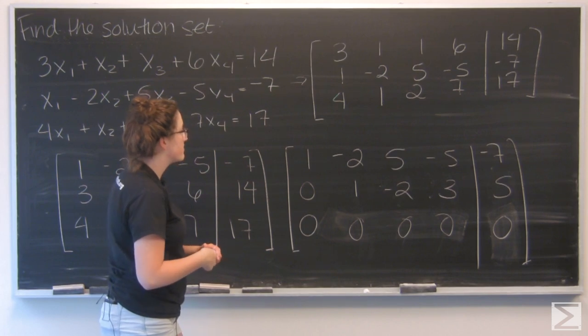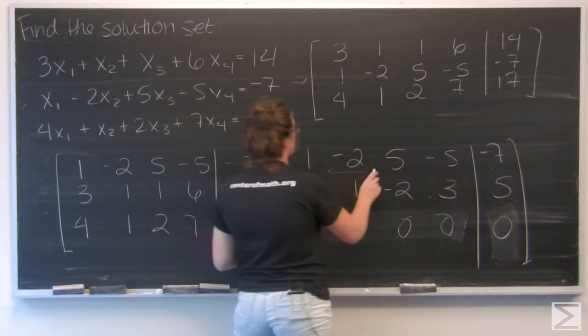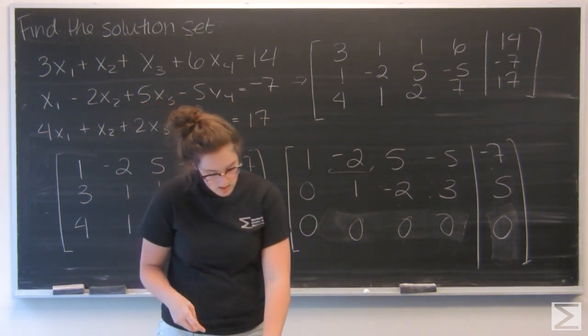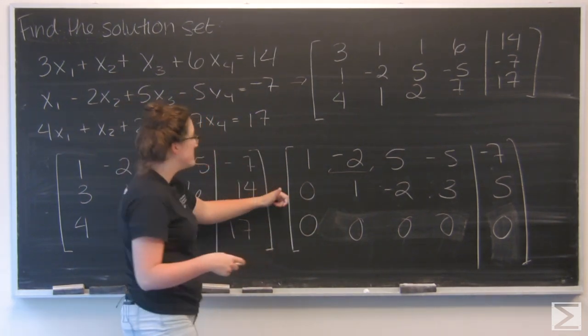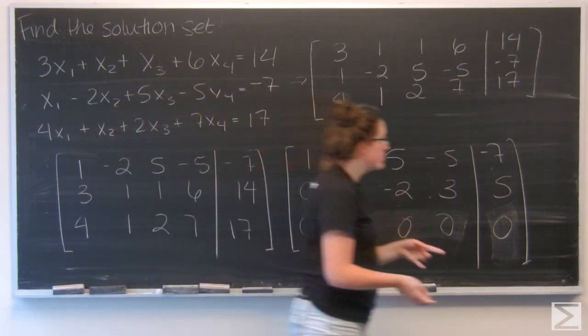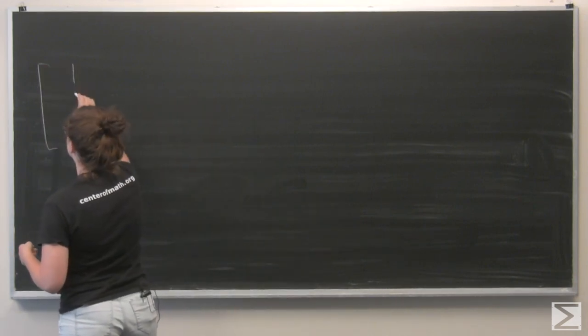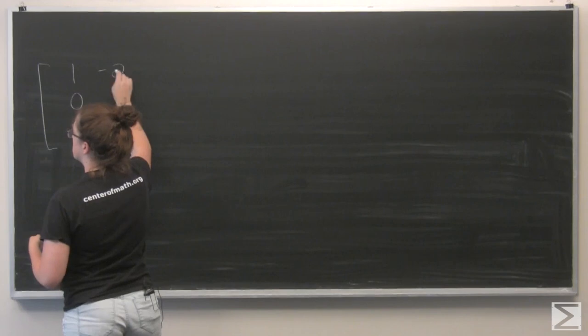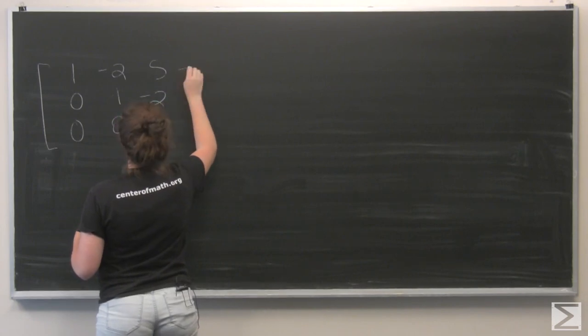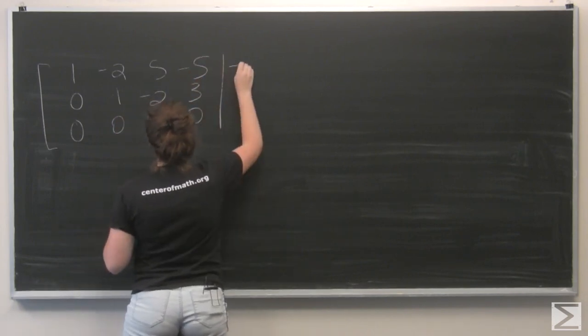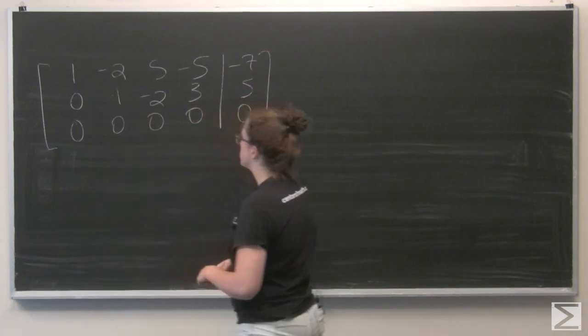And to put it in reduced row echelon form, I just need to clear that negative two from the top. So to do that I want to add two times the second row to the first row. I'm going to go ahead and move over here, I'm going to copy my matrix over again first.